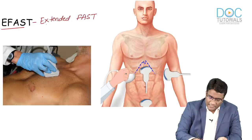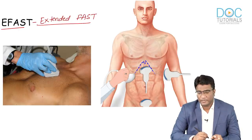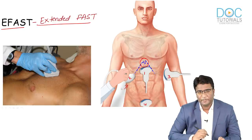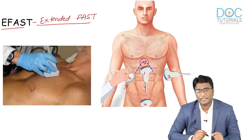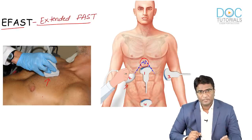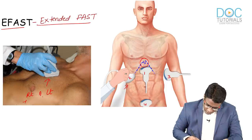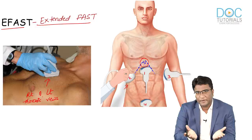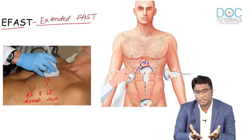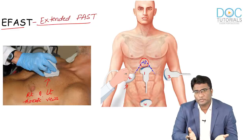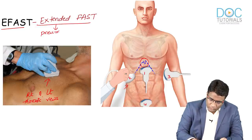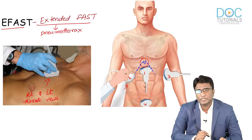eFAST or extended FAST adds the right and left anterior thoracic views to the four traditional FAST views. This extends the field of view onto the anterior thorax to evaluate for pneumothorax. When the patient is supine and there is pneumothorax, air ascends anteriorly, so just anterior views are sufficient. The right and left anterior thoracic views are added mainly to look for pneumothorax in addition to hemoperitoneum and pericardial collections after trauma.